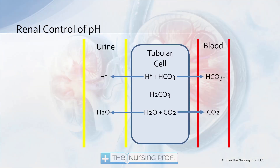Renal control of pH is from the tubular cell. In the kidney itself, the tubular cell is going to help control our pH as well. We can be moving the hydrogen ions out to the urine, dumping them off. We can be moving the bicarb into the bloodstream to help buffer it. We can be moving the water out so the CO2 remains, and then the CO2 and the bicarb would buffer each other out through the carbonic acid equation.